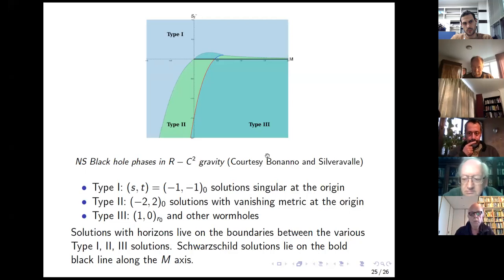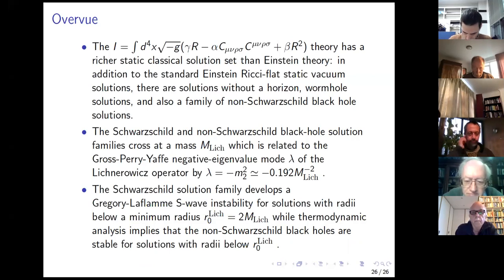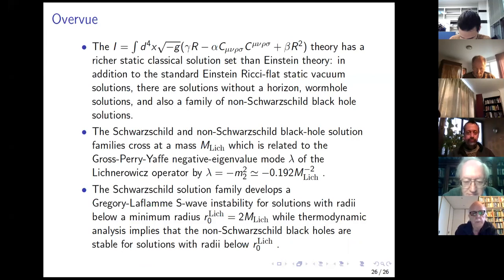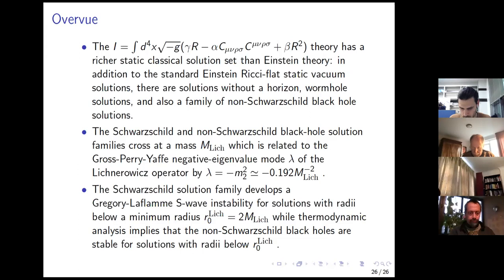In summary, the R-plus-Weyl-squared-plus-R-squared theory has a richer classical static solution space than pure Einstein theory. We have vacuum solutions without a horizon, wormhole solutions, and a family of non-Schwarzschild black holes. These cross the Schwarzschild family at the Lichnerowitz point related to the Gross-Perry-Yaffe negative eigenvalue mode. The Schwarzschild solution itself becomes unstable at low masses, while thermodynamic analysis implies the non-Schwarzschild black holes are stable against S-wave instabilities for radii below the Lichnerowitz point. I'm happy to answer any questions.